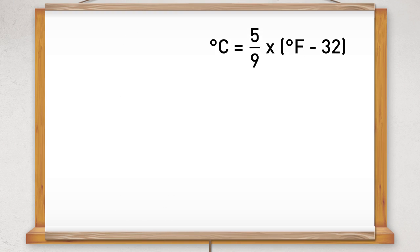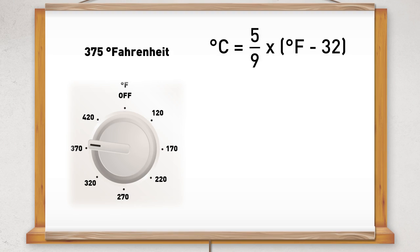So if a recipe quotes an oven temperature of 375 Fahrenheit, we need to use the formula to work out the Celsius for a modern oven. So let's substitute 375 into the formula. C equals 5 over 9 times 375 minus 32.